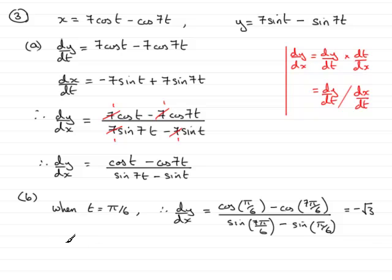So, because we've got to get the gradient of the normal, remember that the gradient of the normal will be negative the reciprocal of this. So, therefore, the gradient of the normal will be equal to minus 1 over this result, which, in other words, is 1 over root 3. So we've got the gradient of the normal.